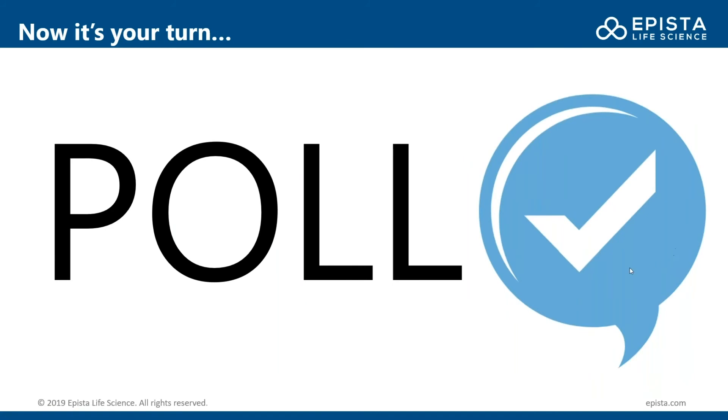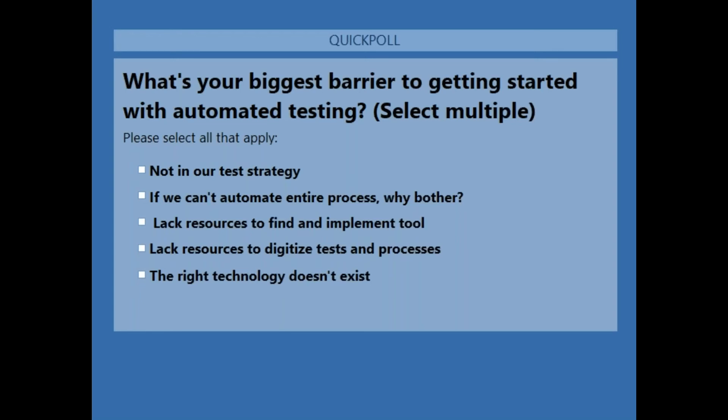Now it's time for a poll. We'll ask you a question to get guidance on how we proceed. The question is: what is your biggest barrier to getting started with automated testing? You can select multiple options: it's not in our test strategy today; if we can't automate the entire process, why bother; lack of resources to find and implement the tool; lack of resources to digitize tests and processes; or the right technology doesn't exist.